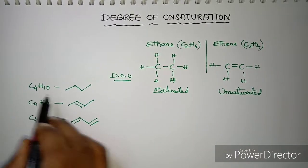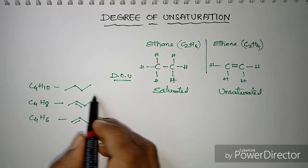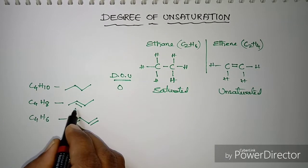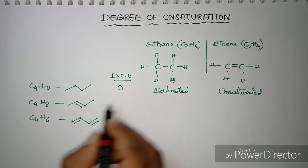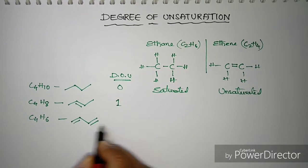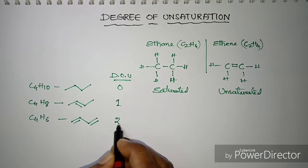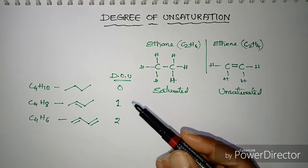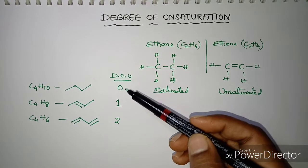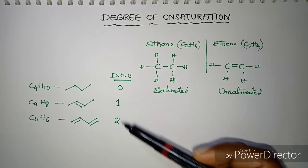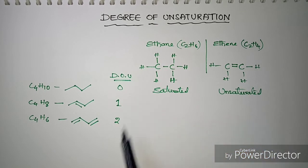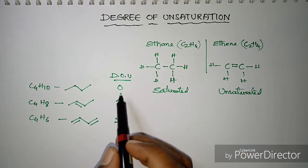Now if I say degree of unsaturation: in case of C4H10 it is 0, in case of C4H8 it is 1, and for C4H6 it is 2. Let's try to understand how these values 0, 1, and 2 have come. For that we have a calculation — how to arrive at the degree of unsaturation value.